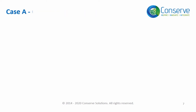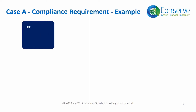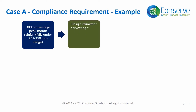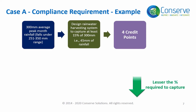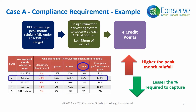For example, if the average peak month rainfall for the project location is 300 mm, the project has to design the rainwater harvesting system to capture at least 15 percent of 300 mm, that is 45 mm of rainfall, to score four points. A point to note here is that the higher the peak month rainfall, the lesser is the percentage required to capture.